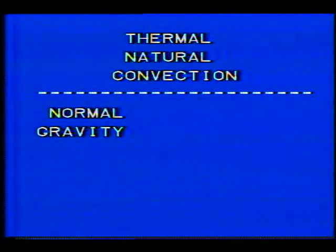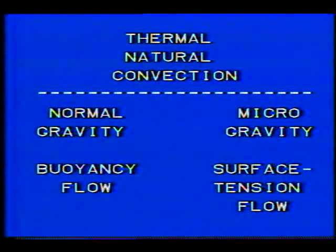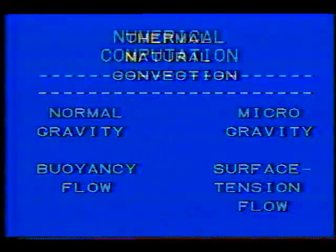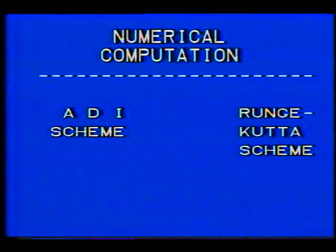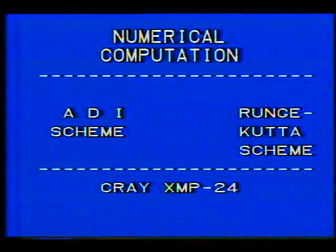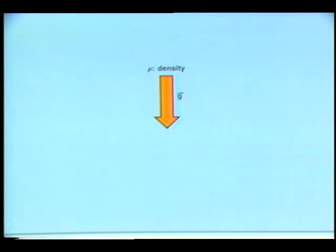Two types of evaporation-induced convection are presented: one under normal gravity where buoyancy is the most significant force, and the other under microgravity where buoyancy force subsides and surface tension effects predominate. The patterns of flow that describe them were obtained computationally using an ADI scheme, while a Runge-Kutta scheme tracks the motion of the fluid tracers. The calculations required about one hour of CPU time on the Cray XMP-24.